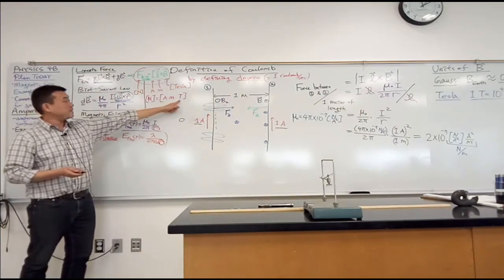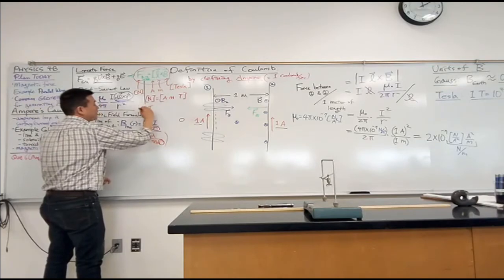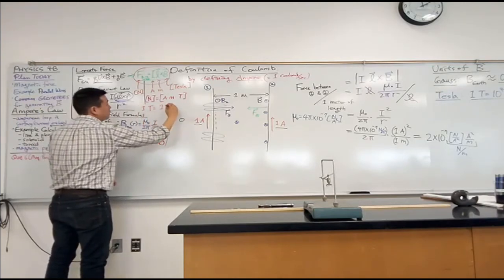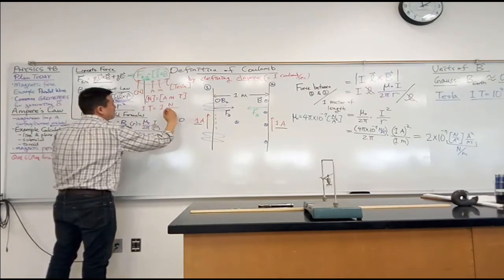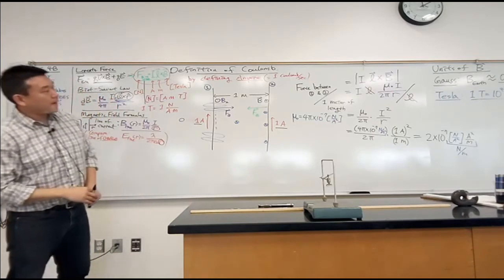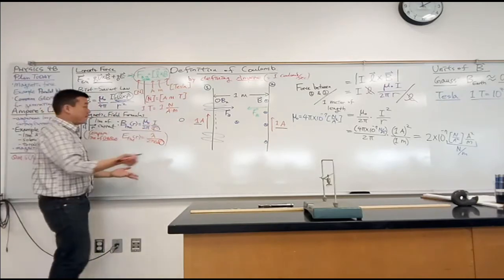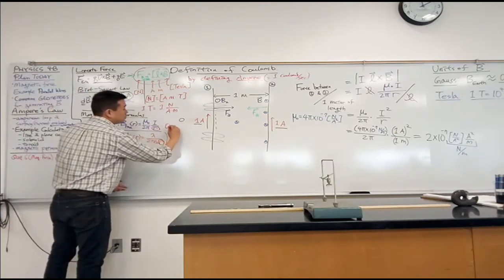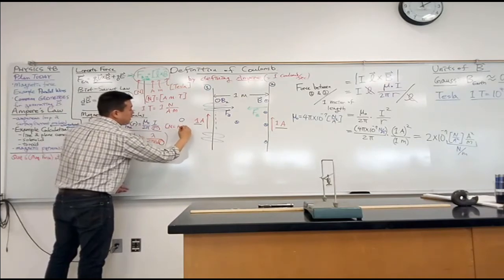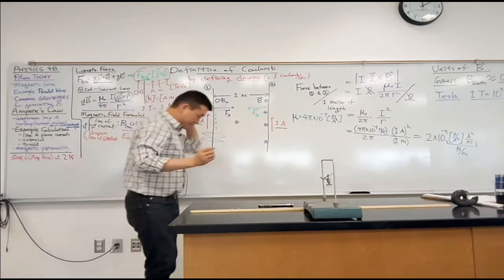So solve it for T, Tesla. Then you get Tesla, or rather one Tesla is equal to one newton per ampere times meter. Hey, that's not what I have there. But I can write out what a newton is. Hopefully you have this memorized, newton is equal to kilogram times meter per second squared. Now if you don't have this memorized, how would you get at that?